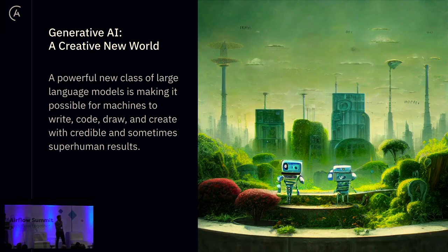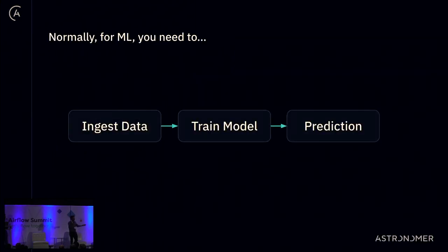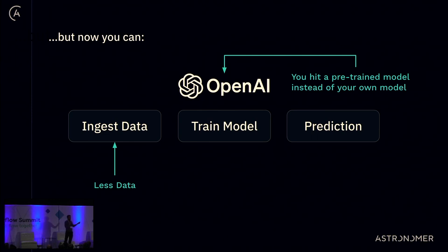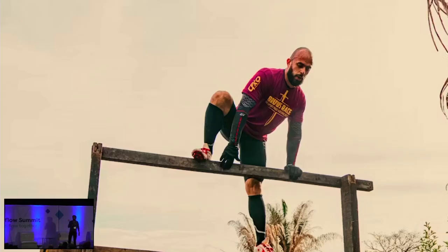LLMs are making the world crazy. Traditionally, ML requires ingesting data, training a model, and making predictions. For LLMs it's different — the model already exists and is already trained on a large dataset, like Llama 2 from Meta. You don't need to ingest the huge volumes of data used in other ML use cases. You can use the model as just an API to make predictions.